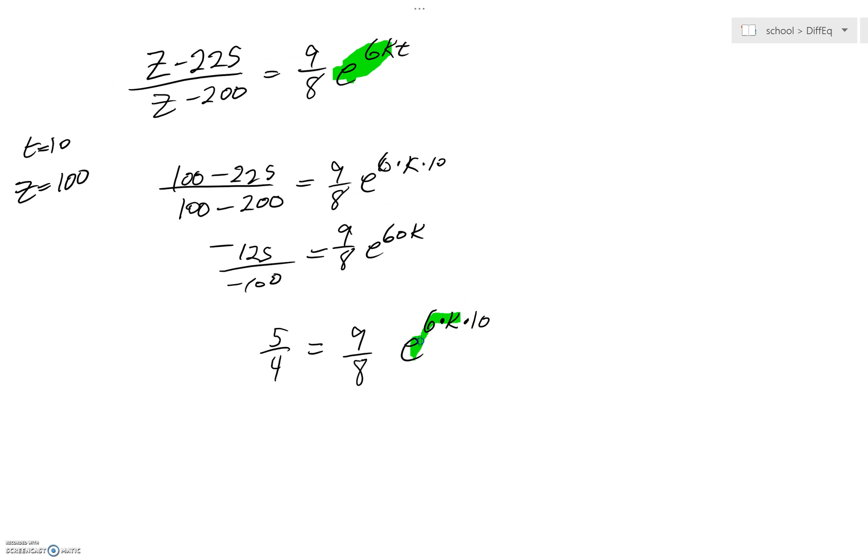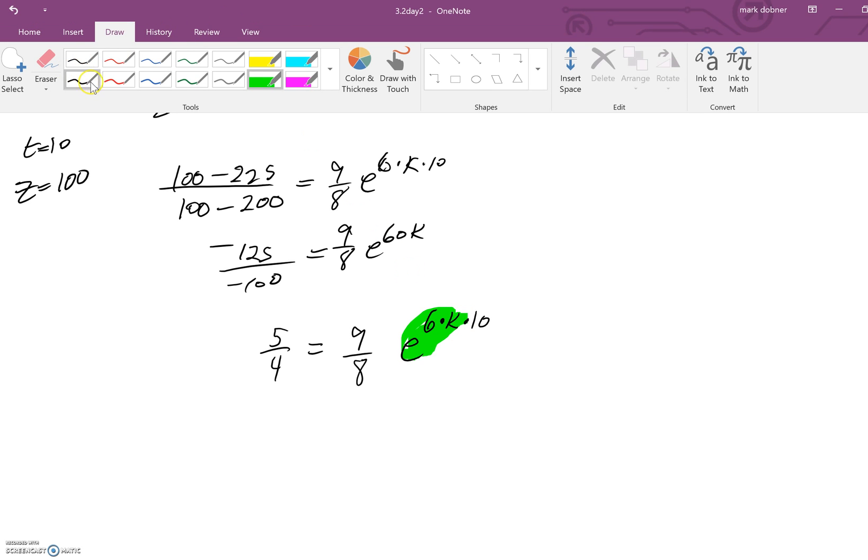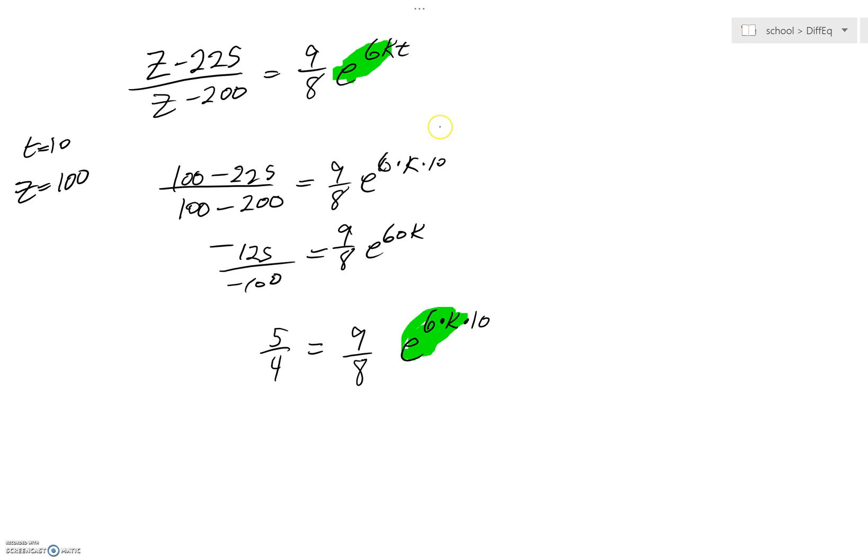And if you'd like to do that, there is nothing wrong with that at all. However, if I can solve for e to the 6k, that's really going to make life simpler. So what I'll do is I first want to get rid of this 9 eighths. I'm going to multiply by 8 ninths. And you can see 4 goes into 8 twice. 2 times 5, we get 10. And we have 10 ninths.